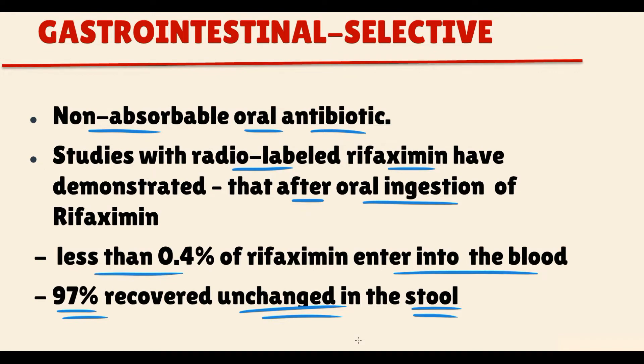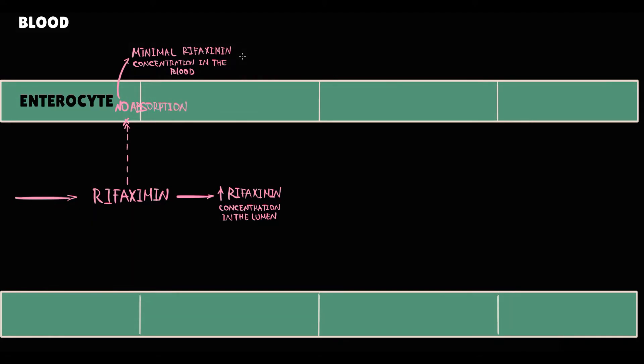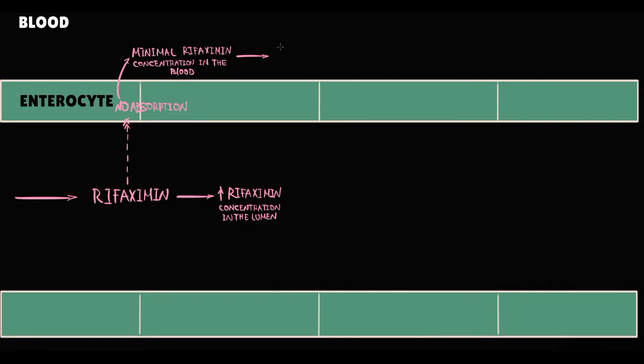Before discussing rifaximin's mechanism of action, why is rifaximin so safe? There is a very simple reason. With lack of systemic absorption, rifaximin concentration in the blood is very low. And the lower the concentration in the blood, the lower is the chance that rifaximin will enter into any other tissue in the body. So rifaximin basically has no systemic effects, and because of that, the incidence of adverse events is low.